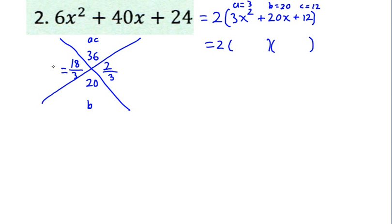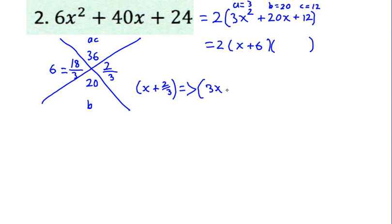On the left side, 18 divided by 3 is 6, so one of our factors is x plus 6. And we have 2 thirds remaining. Taking x plus 2 thirds and applying the bottoms-up method, we bring that 3 up with the x to get 3x plus 2. So our remaining factor is 3x plus 2. These factors when multiplied together will equal 6x squared plus 40x plus 24.